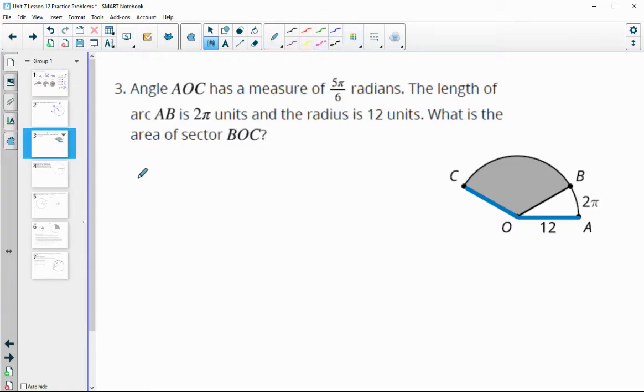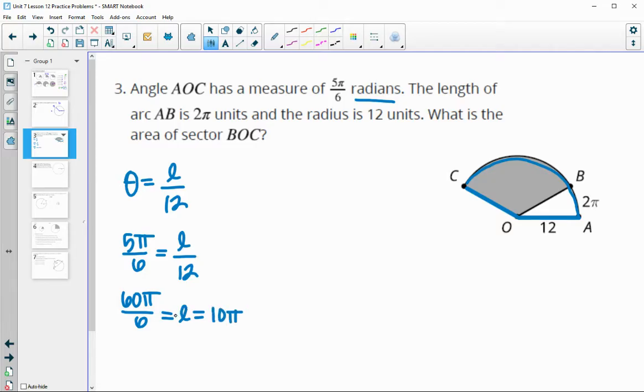We can use our definition of a radian, which is that a radian equals the arc length divided by the radius. Our angle is 5 pi over 6 equals the arc length over 12. We could solve for this arc length by cross multiplying, so 12 times 5 gives us 60 pi over 6, which simplifies to 10 pi. So this whole blue arc is 10 pi.